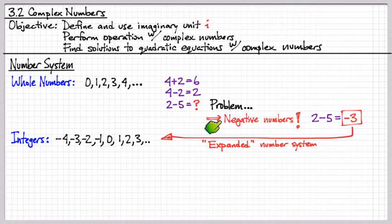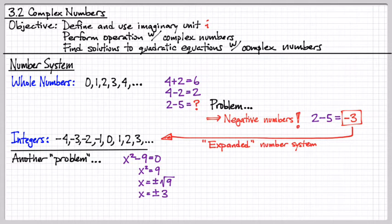But later on, in middle school, we expanded the number set so that we can deal with 2 minus 5. We added this concept of a negative number, so 2 minus 5 we now said is negative 3. We had a solution to this problem, and so now we had all these integers here. We expanded our number system, and yet we still had another problem.